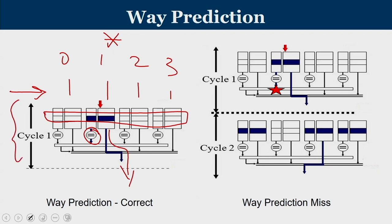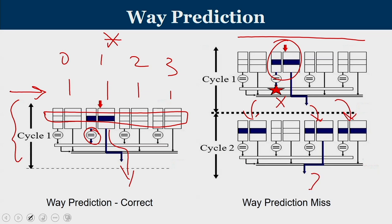If prediction goes wrong — shown on the right side — we tried the predicted way but it resulted in a miss; that does not mean the address is a miss in the cache. In the next cycle the remaining 3 ways are searched in parallel to find a hit. We add a few extra bits to facilitate this prediction. If prediction is correct, we complete in 1 cycle; if wrong, we use one more extra cycle as a penalty.